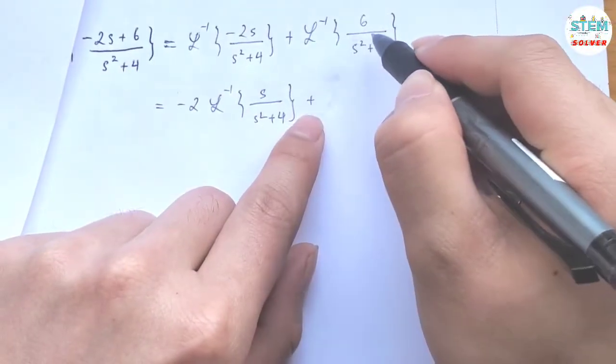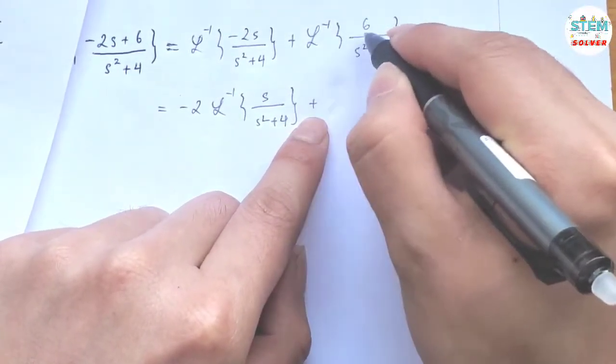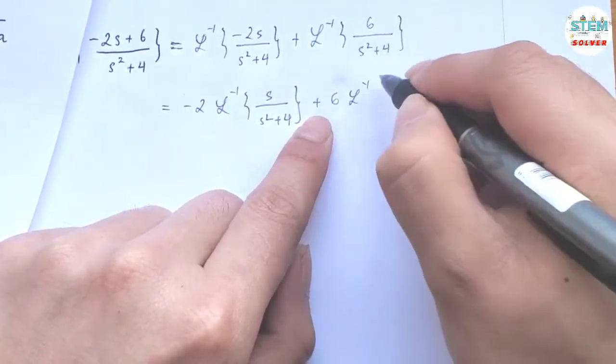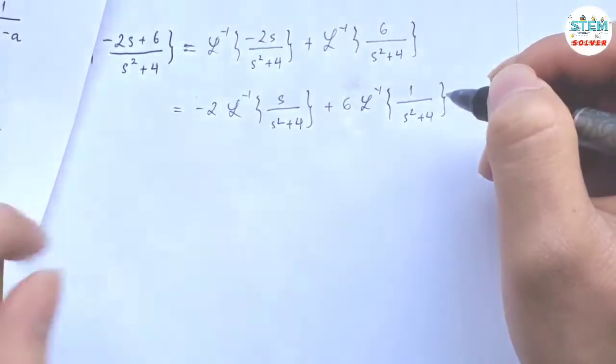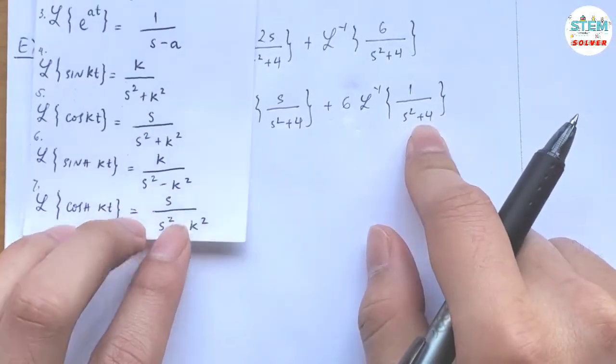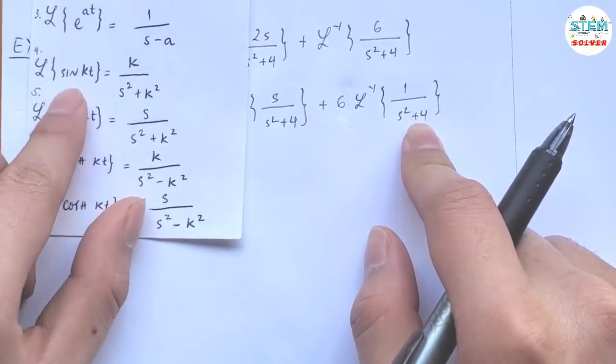Now for this one, I'm going to pull out the 6. And in sine here, I have 1 over x squared plus 4. So this is almost close to the form of sine.